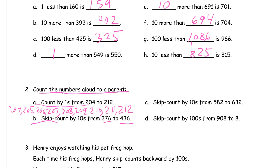Skip count by tens from 376 to 436, so we've got 376, 386, 396, 406, 416, 426, 436.